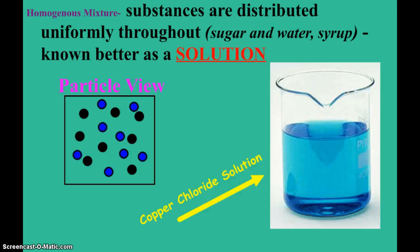So homogeneous means all the substances are distributed uniformly throughout. So the copper chloride was evenly distributed amongst the water. Syrup, for example. Anything, like, again, going back to food examples, but like a milkshake.